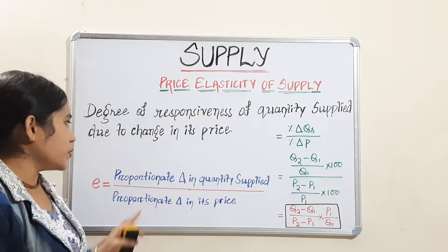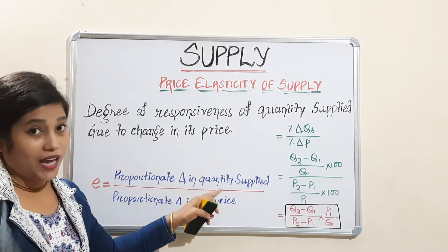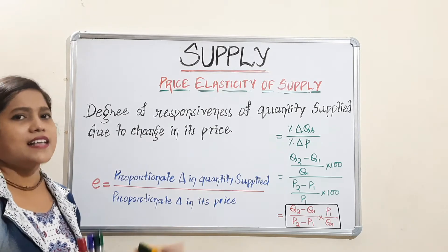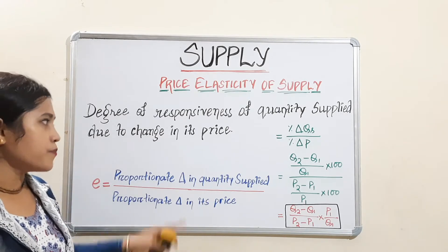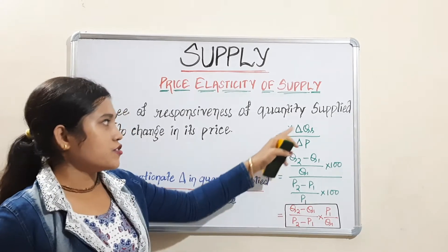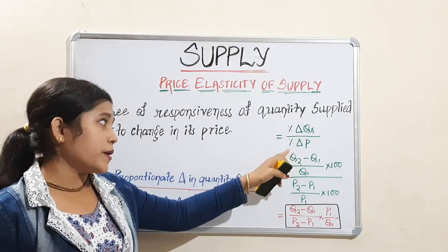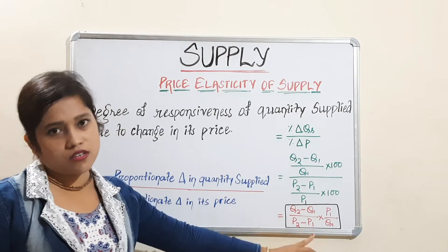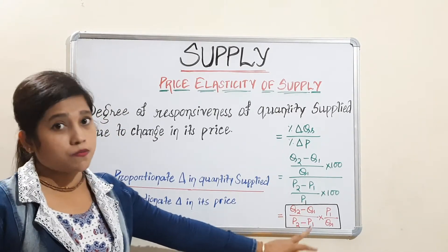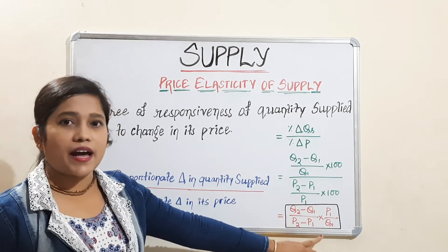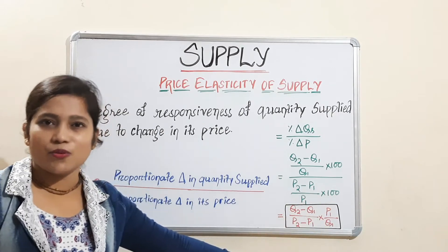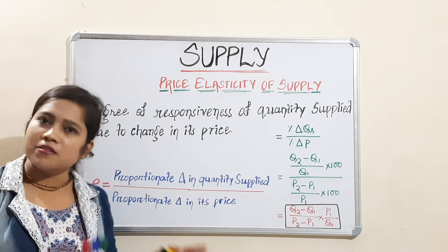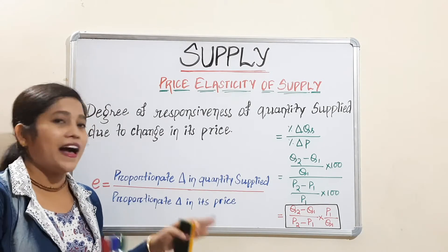So what is the formula? Proportionate change in quantity supplied divided by proportionate change in price — just as discussed in the demand chapter. The formula is: percentage change in quantity supplied divided by percentage change in price, which works out to (Q2 minus Q1) divided by (P2 minus P1) multiplied by P1 divided by Q1.